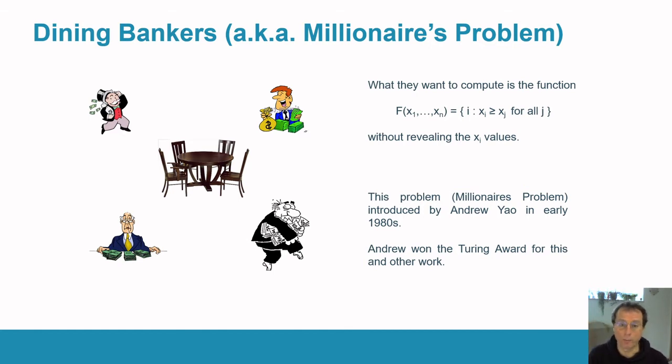This is a very old problem. It's called the millionaire's problem in the two-party case. It was introduced by Andy Yao back in the 1980s, and Andy won a Turing Award for this and other works. So it's a classic computer science problem.